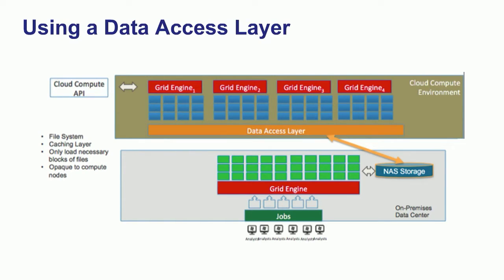If it's a caching system, the algorithms will read ahead and start populating the cache as more and more nodes come up. There was a study from Cloudera that the average Hadoop workload accesses the same file roughly 500 times, and so those types of workloads are just tailor-made for a caching solution.